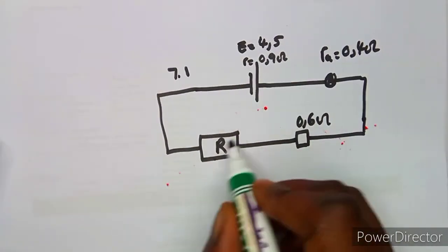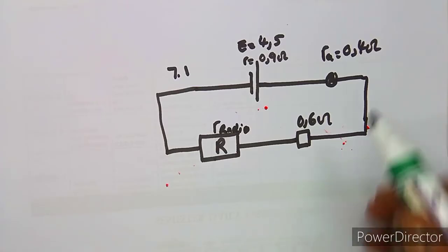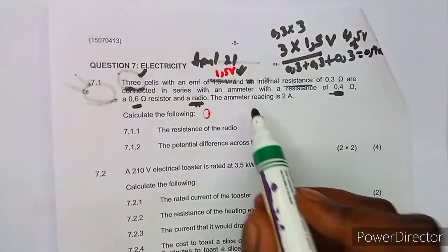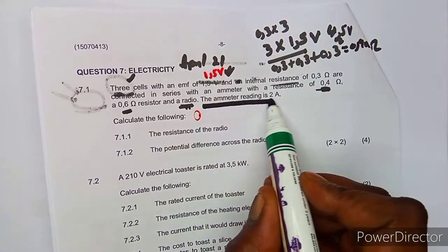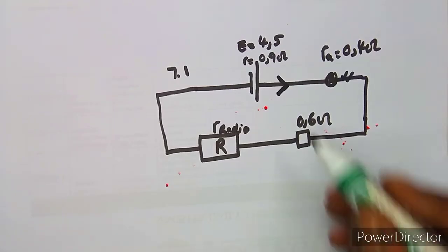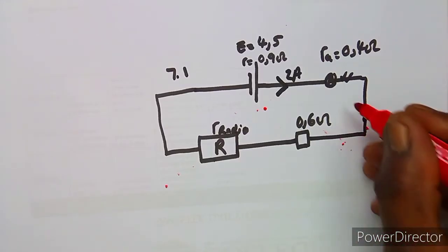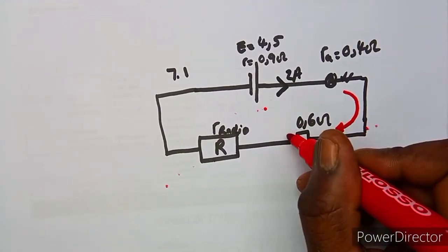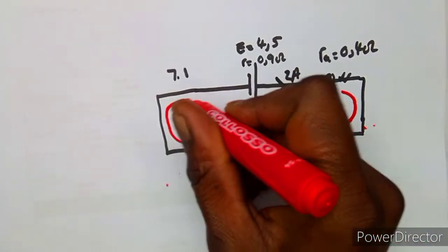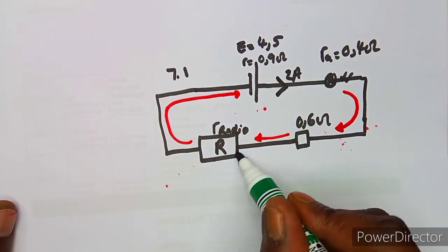We are given that the ammeter reads 2 amps, which means the current flowing in the circuit is 2 amps. Remember that in a series circuit the current is the same throughout — the same current flows through every component.